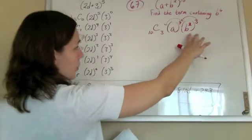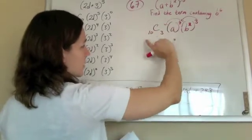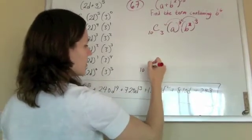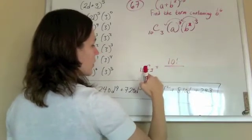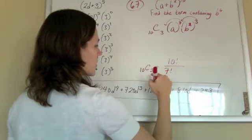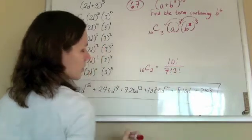So we have our setup. All we have to do is figure out what this 10 C3 is. So I'm going to go down here, say 10 C3 is going to be 10 factorial over 10 minus 3 is 7 factorial over an extra 3 factorial.